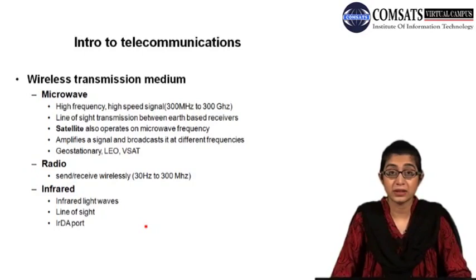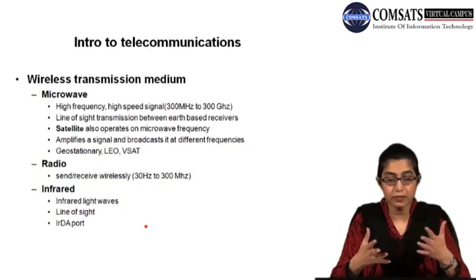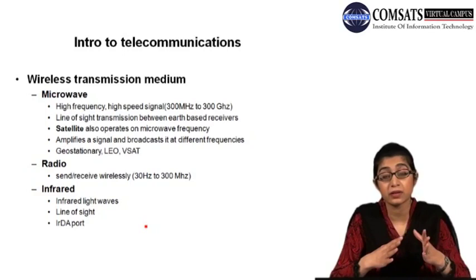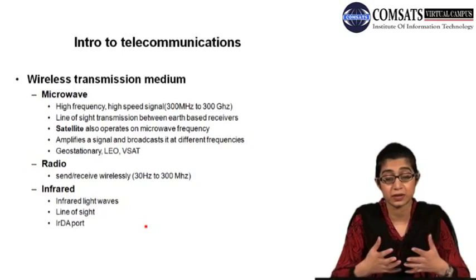Let's start from the very high frequency one — that is the microwave, also called fixed wireless. It provides high frequencies and high-speed signals; the signal moves at a rate of 300 megahertz to 300 gigahertz. In microwave, there are earth-based receivers or transceivers. Transceiver means they can both transmit and receive. Antenna-based transceivers are placed on top of buildings with a dish antenna that can receive signals.